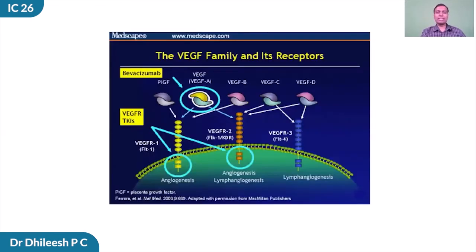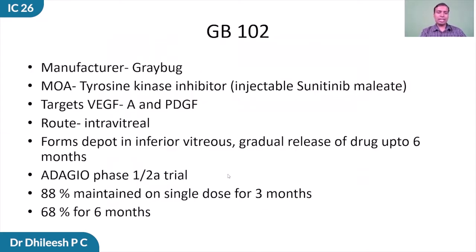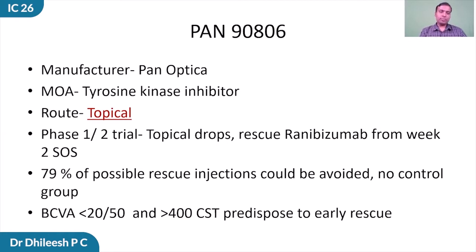Another interesting group is tyrosine kinase inhibitors. The VEGF receptor 2 intracellular domain has tyrosine kinase activity, and this drug acts at that level. GB-102 by Graybug Pharmaceuticals targets VEGF-A and VEGF. It forms a depot on intravitreal injection into the inferior vitreous, gradually releasing the drug for up to six months. The Adagio phase 1-2 trial showed that 88% of patients maintained on a single dose for about three months, and 68% did not need an injection for another six months. PAN-90806 is a topical tyrosine kinase inhibitor by Panoptica. In the phase 1-2 trial, topical drops were given with rescue injections offered from week 2, and about 79% of possible rescue injections could be avoided. ICON-1 targets tissue factor and in the MIVI trial, in combination with ranibizumab, showed more reduction in size of CNVM, though visual outcome was similar in both groups.